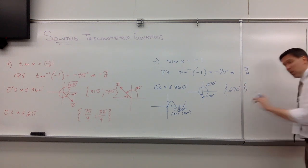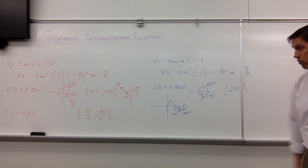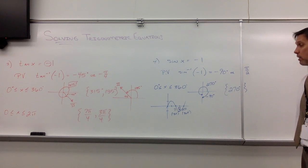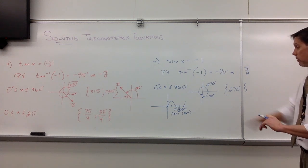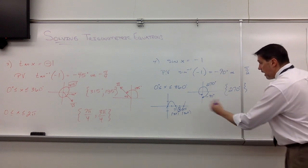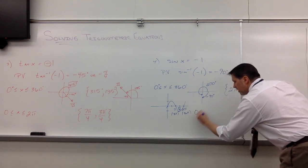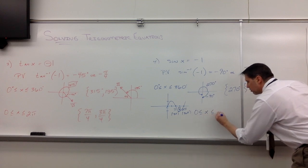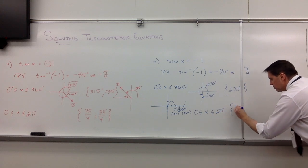Now, just because it's quadrantal, don't always assume there's just going to be one solution. You can get two solutions. It is possible. But let's finish this off. So if they ask for radians, they said okay, 0 less than or equal to x less than or equal to 2π, you would call this 3π/2.